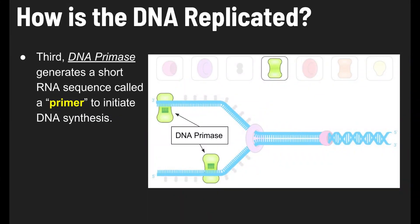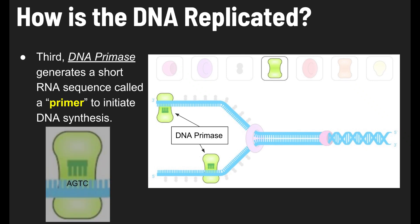In step three, another enzyme called DNA primase generates a short RNA sequence called a primer to initiate DNA synthesis. The green blobs represent the enzyme primase, specifically DNA primase. The blue strand is the DNA, which has the bases A, G, T, and C in it — the tick marks represent the bases.